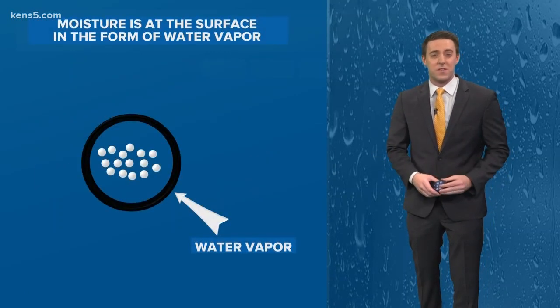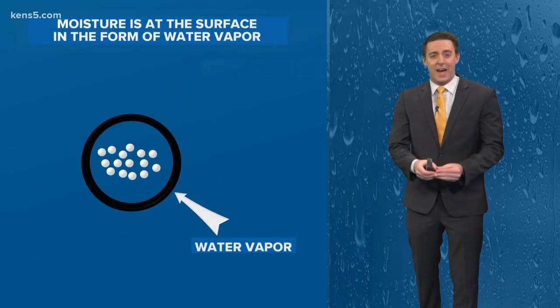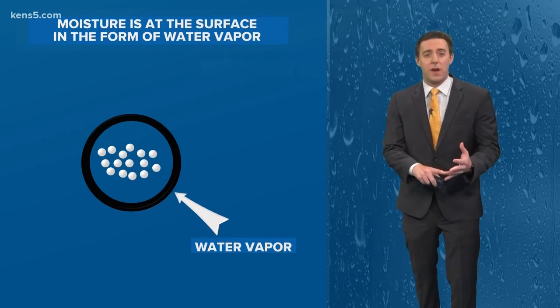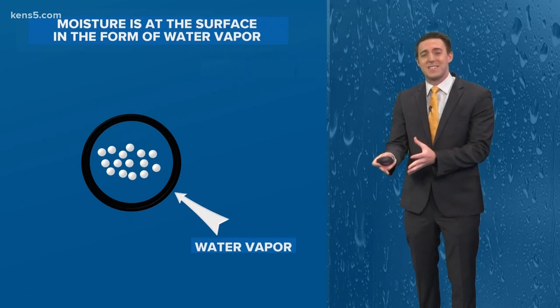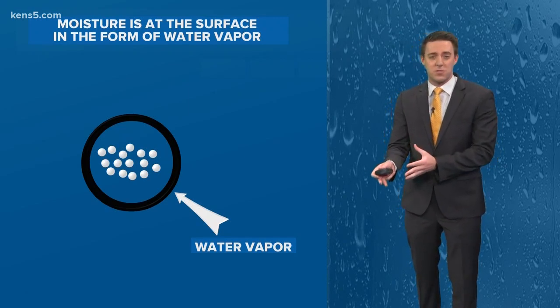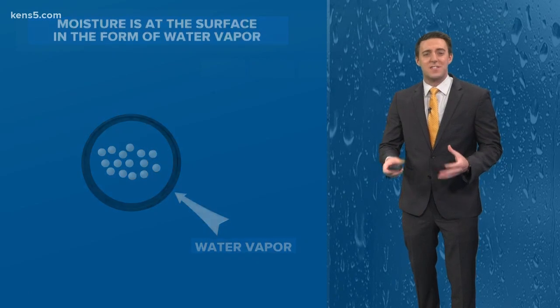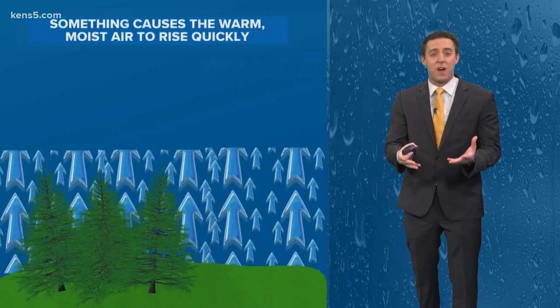Well, it all starts as moisture down towards the surface, known as water vapor. As a system comes through — it could be a cold front, an area of low pressure, or even something as simple as a sea breeze closer to the coast — it causes this water vapor to rise rapidly.